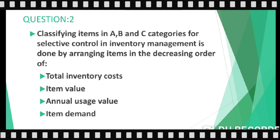Question two is about ABC analysis. To classify items in A, B, and C categories for selective control in inventory management, items are arranged in descending order of what? The options are: total inventory cost, item value, annual usage value, or item demand. The answer is annual usage value — we arrange ABC items on the basis of their annual usage value.